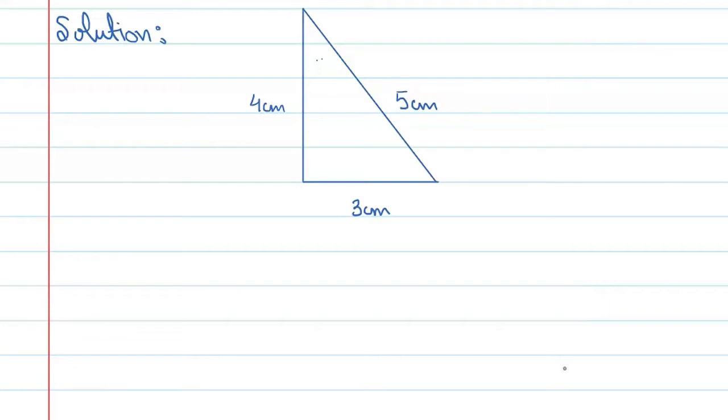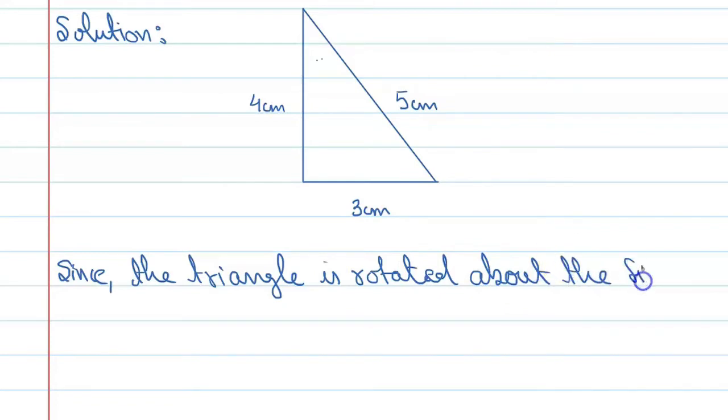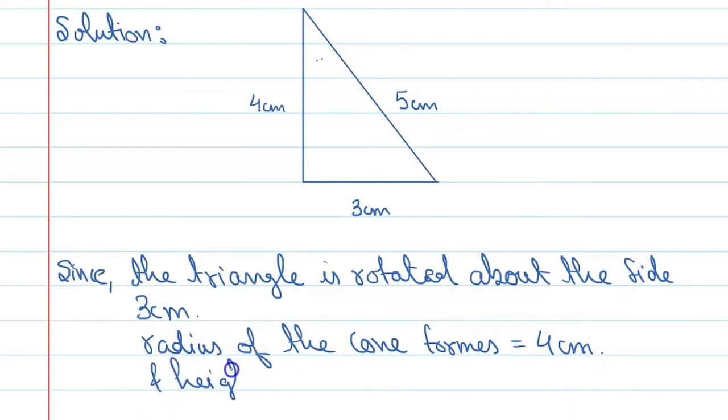Here we can say that since the triangle is rotated about the side 3 cm, so radius of the cone formed is 4 cm and height h is equal to 3 cm.